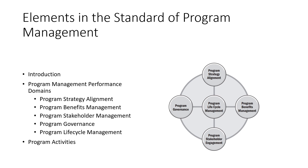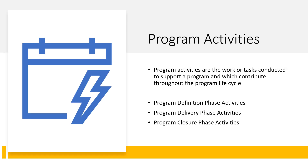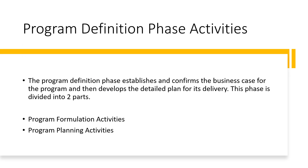The final element in the Standard of Program Management is program activities, and that is what we're going to discuss today. In my previous video we discussed that program activities spread across the entire program life cycle. We also know that program activities are categorized based on the program phase: program definition phase activities, program delivery phase activities, and program closure phase activities. In today's video we are going to discuss program definition phase activities specifically.